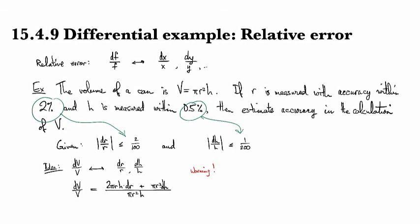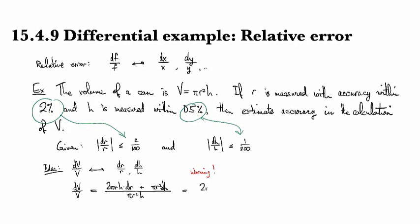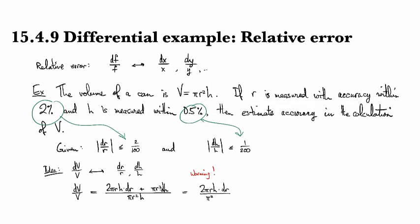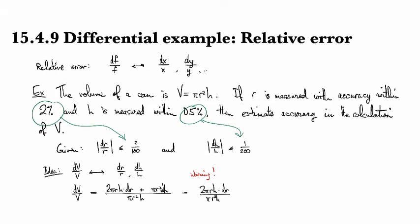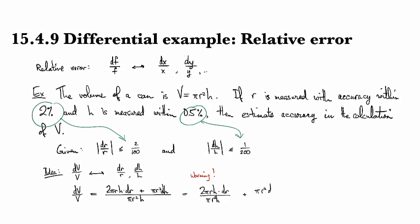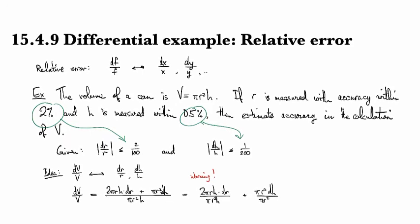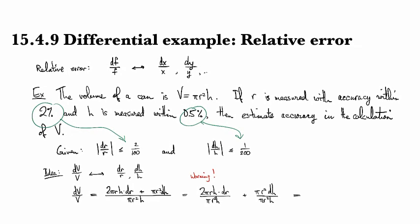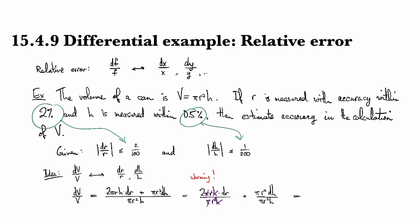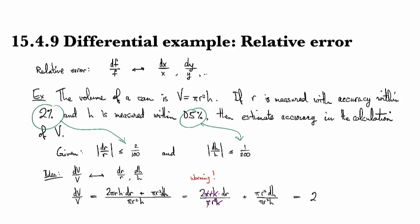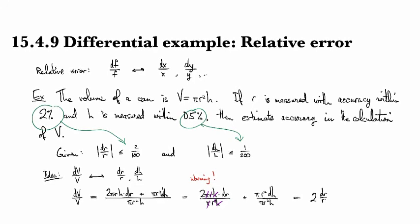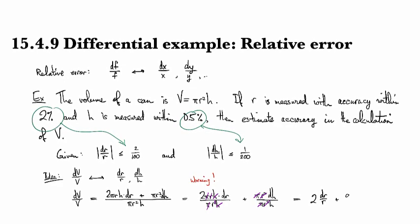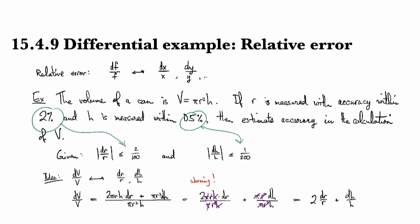For this one I can just actually split it and I think I can get what I want. So 2 pi R H dR over pi R squared H and pi R squared dH over pi R squared H. And so then I can do some cancellation here. I've got H H and lose an R and lose a pi, and I end up with 2 dR over R. And in the other one, I can cancel some pi's and some R squareds, and I just end up with dH over H.